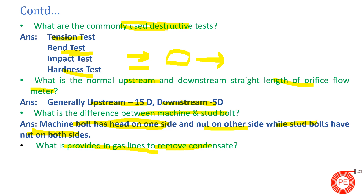What is provided in gas lines to remove condensate? This is important for steam, power plant, or steel plant interviews. Gas condensate is removed with the help of drip pots, which are generally installed on the lower portion of pipelines. The condensate moving with the gas gets separated by these drip pots. If this condensate or moisture enters equipment, it can damage the equipment or reduce burning efficiency.